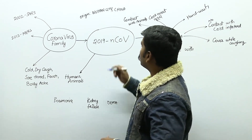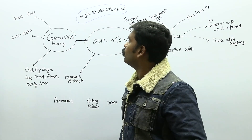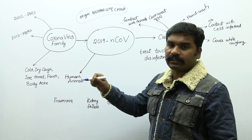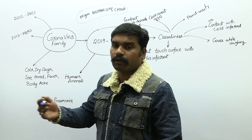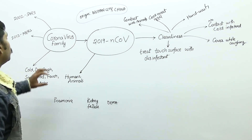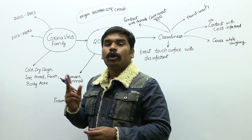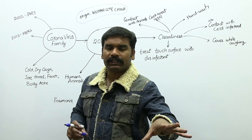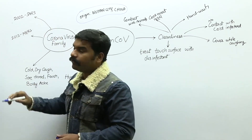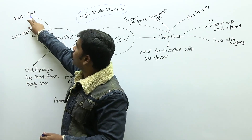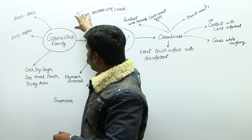The origin of this particular virus — where it was initially detected and started to spread — is Wuhan city in central China. It was detected in late 2019, near the new year. When you look at the coronavirus family, we have seen two similar outbreaks earlier. One occurred in 2002, called SARS — Severe Acute Respiratory Syndrome — which was also part of the coronavirus family and severely impacted the world.